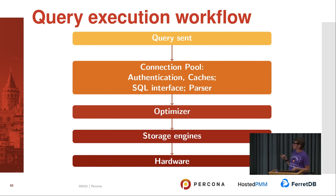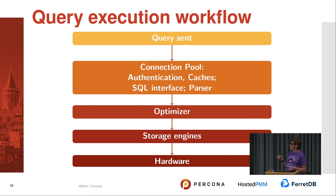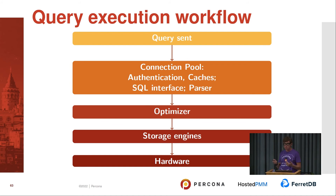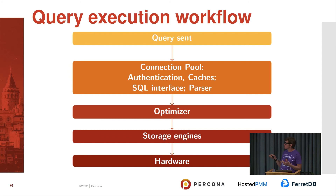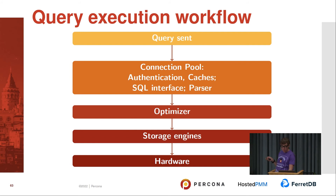Query execution: a query goes to the connection pool, then to the parser cache, then to the optimizer. The optimizer communicates with storage engines — these are two independent parts. The optimizer asks the storage engine about indexes, and the storage engine provides statistics. It's important that index statistics are up to date. Histogram statistics also exist when indexes can't be used. Once the optimizer creates a query plan based on that communication, the storage engine accesses hardware and performs your query.